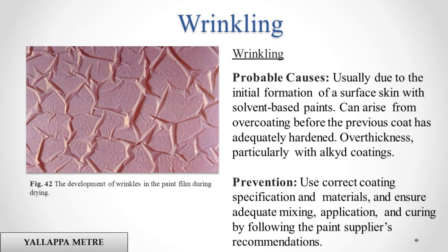Wrinkling. Probable causes: usually due to the initial formation of a surface skin with solvent-based paints. Can arise from overcoating before the previous coat has adequately hardened. Over-thickness, particularly with alkyd coatings. Prevention: use correct coating specification and materials, and ensure adequate mixing, application, and curing by following the paint supplier's recommendations.